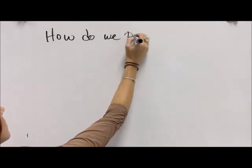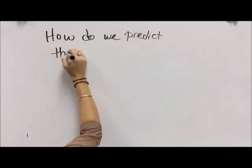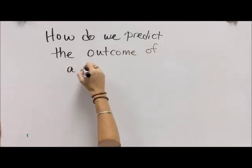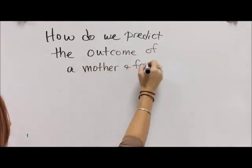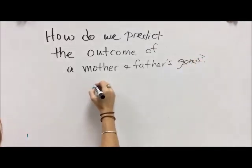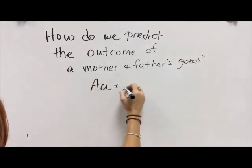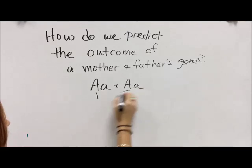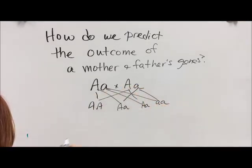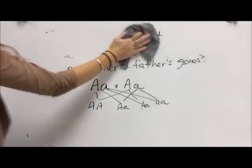Now it's time to look at how we actually predict the outcome of a mother and father's genes. We've kind of looked at the Gregor Mendel thing and how, if we know that two parents are heterozygous, they can give us a homozygous dominant, two heterozygous, or homozygous recessive child. But it's really messy to do crosses this way and to show how the genes come out because it doesn't look very nice.